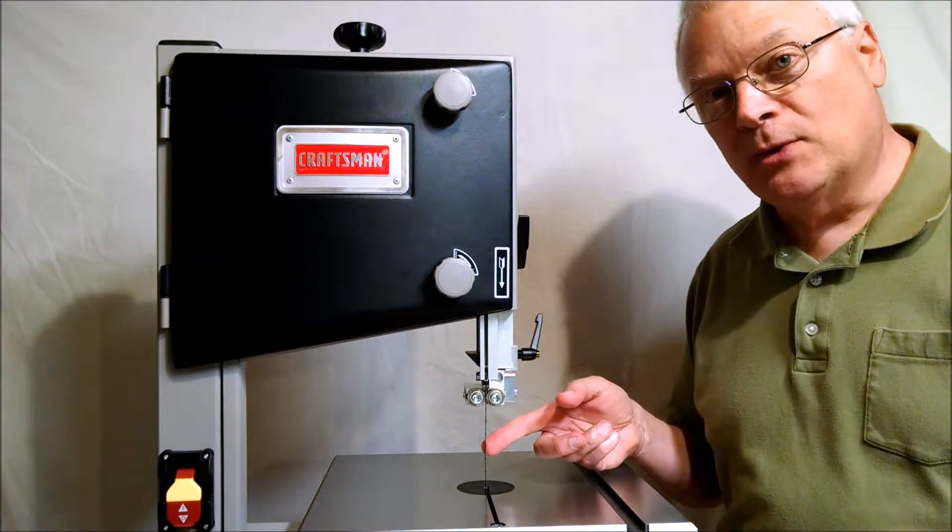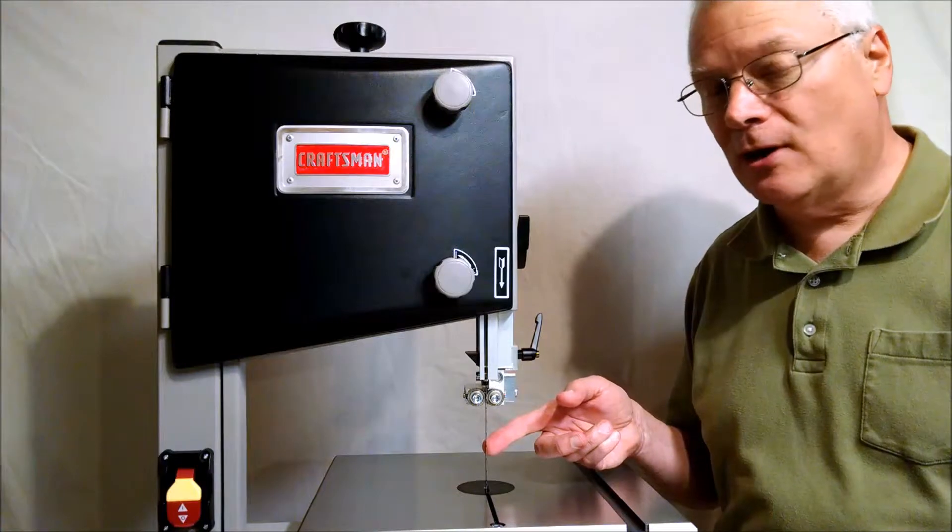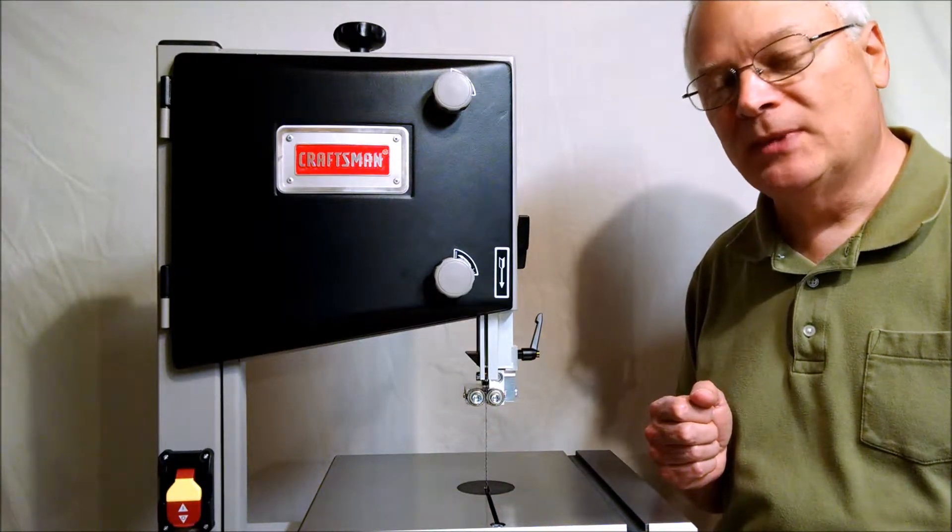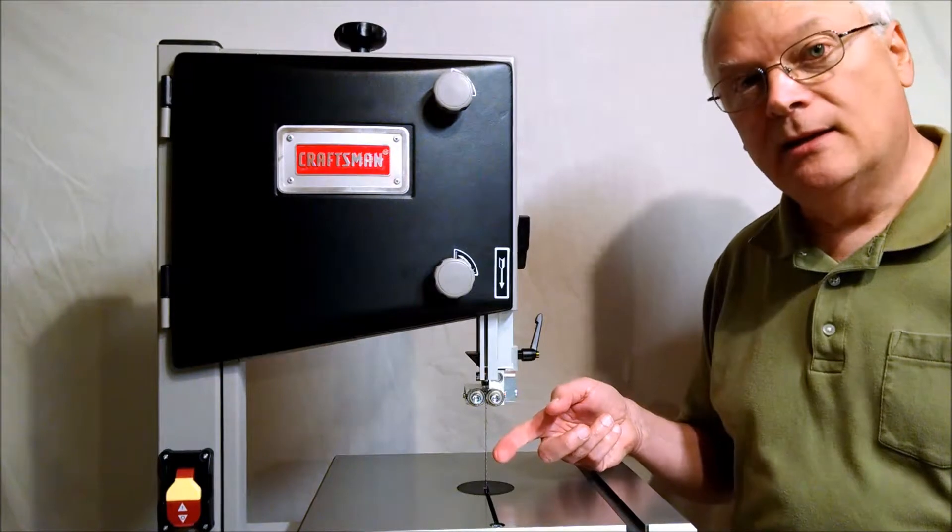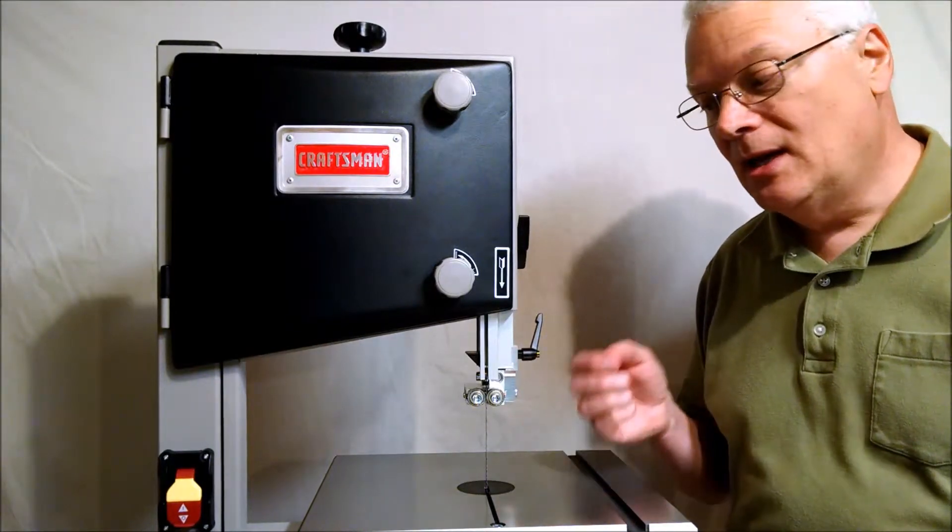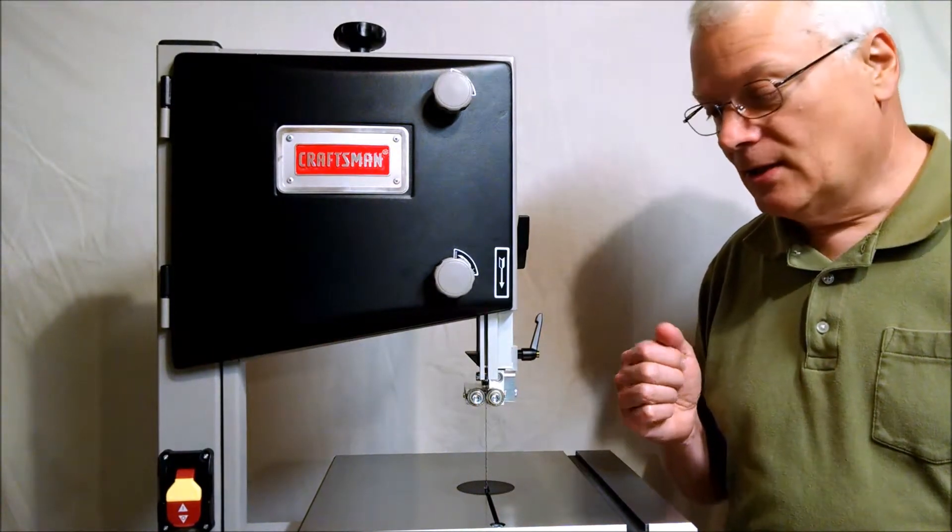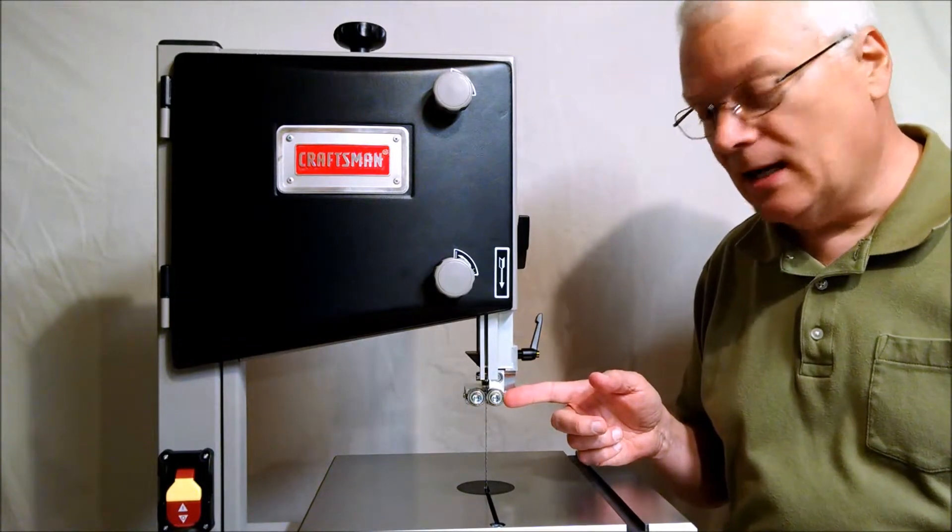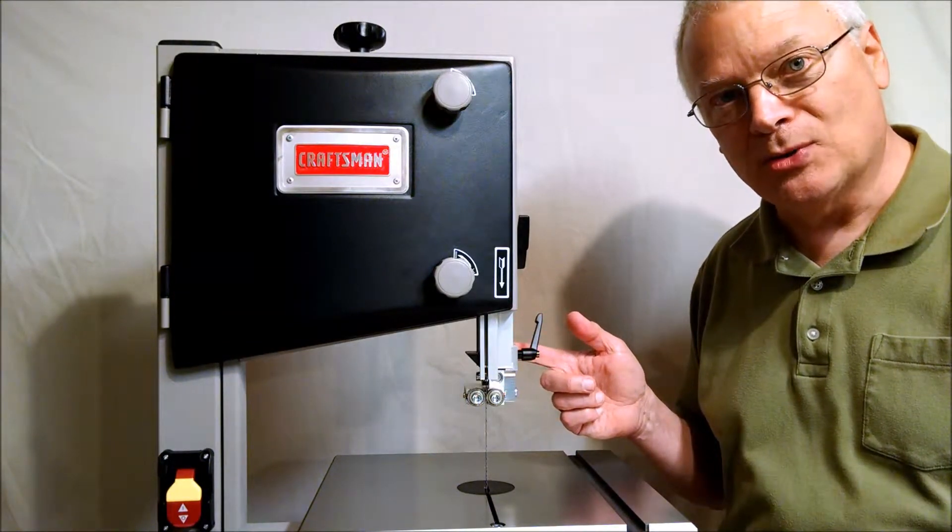Now if you own a Jet or a Recon 10-inch bandsaw, don't run off. This tip is for you too. There are many reasons why you want your blade to be perpendicular to the table, not the least of which is so that you don't have to adjust the blade guides every time you raise or lower the guidepost.